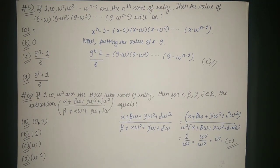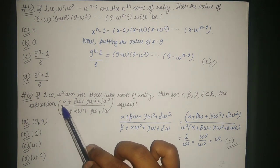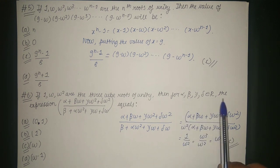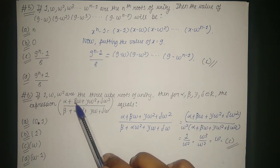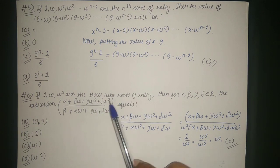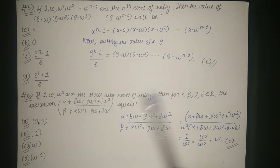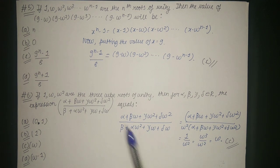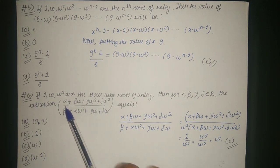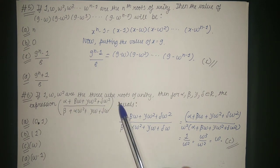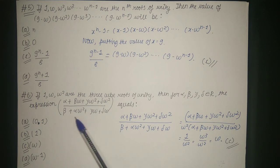The next question: if 1, ω, ω² are the three cube roots of unity, then for α, β, γ, σ belonging to real numbers, find the expression (α + βω + γω² + σω²) / (β + αω² + γω + σω). We are given four options: 0, 1, ω, and ω - 1.